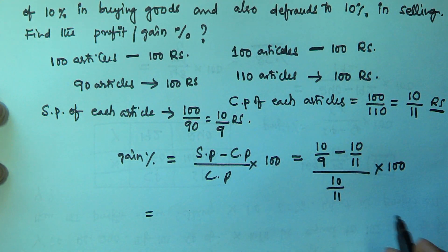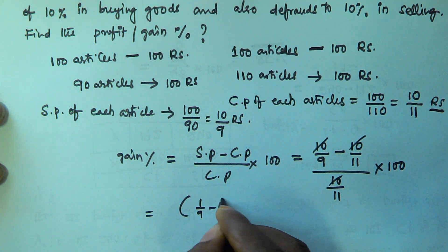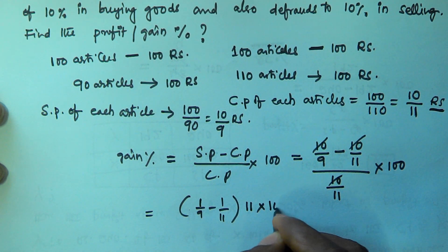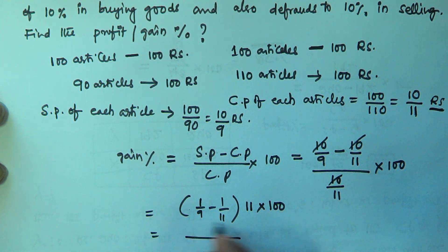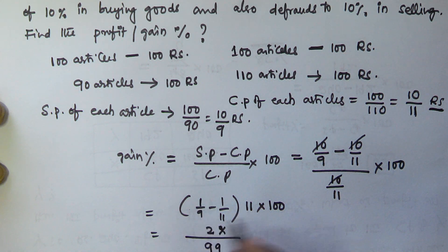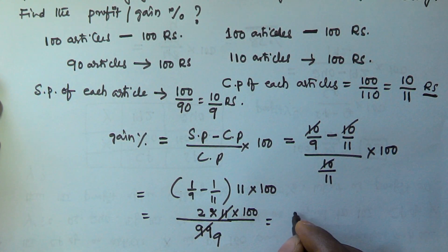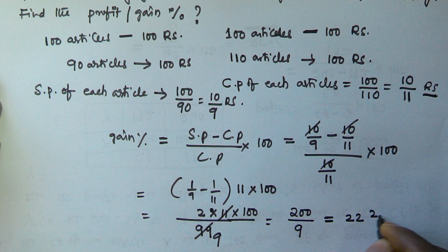Taking 10 out and canceling, we get: (1/9 minus 1/11) into 11 into 100. That gives us (11 minus 9) over 99, which is 2 over 99, into 11 into 100. So the result is 2 into 100 divided by 9, which equals 200/9.